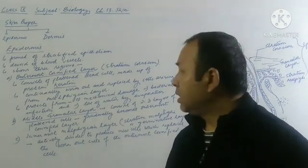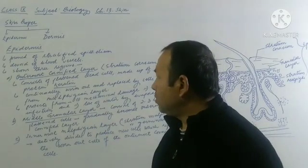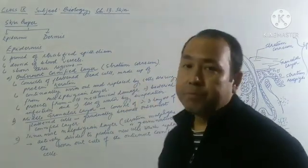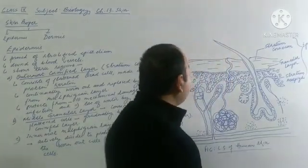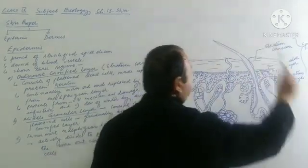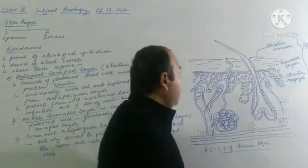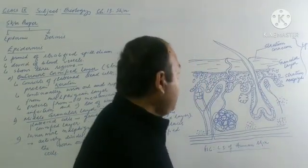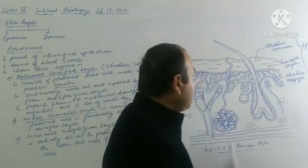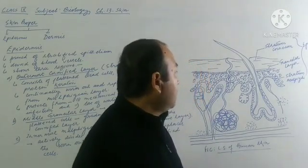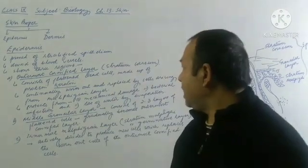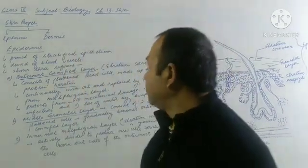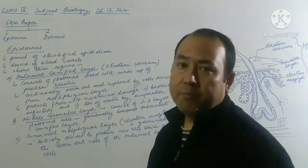The outermost region of the epidermis is called the cornified layer, also called stratum corneum — you can see this in the figure. It is followed by the middle layer, which we call the granular layer. The innermost layer is called the malpighian layer, also called stratum malpighii, or the germinative layer, because cells in this region keep on dividing.